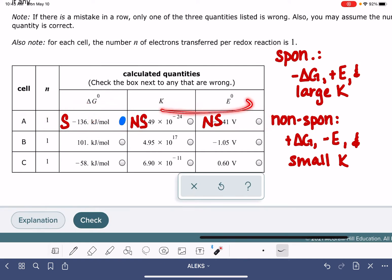K and E are telling us that the reaction is non-spontaneous. Delta G is telling us that the reaction is spontaneous. It's the one that doesn't match the others. So that's got to be a wrong quantity. That's all we have to do.